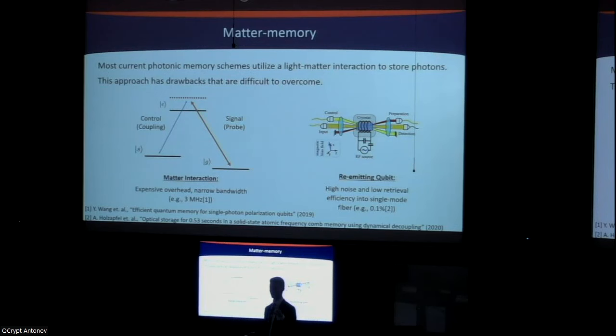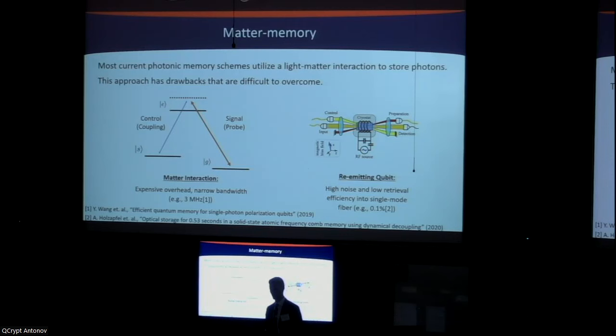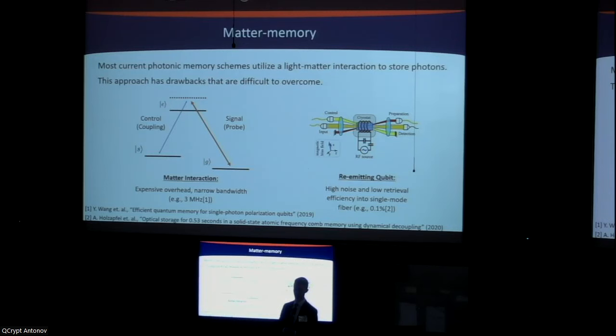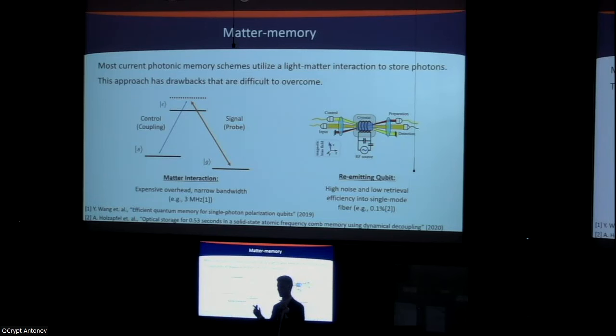There are a bunch of different quantum memory technologies out there. Some of the most common approaches are so-called matter memories — effectively, you take a single photon and transduce it into an atomic state of some matter ensemble, which could be a single atom or a cloud of atoms. You convert the energy into this atomic state, and when you want it back, you probe it and retrieve it at a later time. This is pretty effective but comes with some pretty huge drawbacks that are hard to overcome.